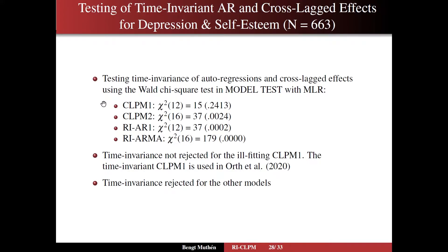For the cross-lagged panel model with autoregressions lag 1, we can actually not reject invariance across time. And with cross-lagged panel model order 2, we can reject, but not very strongly so. This is a little interesting phenomenon that happens.